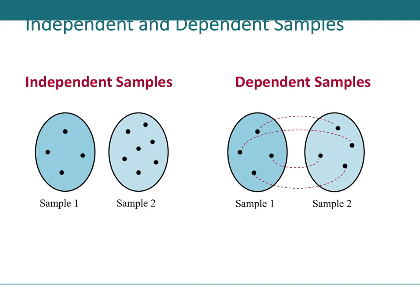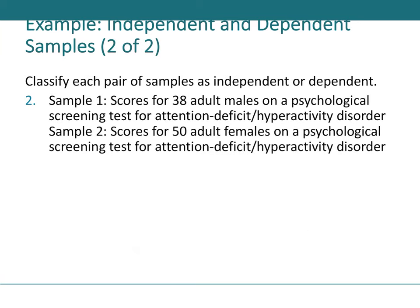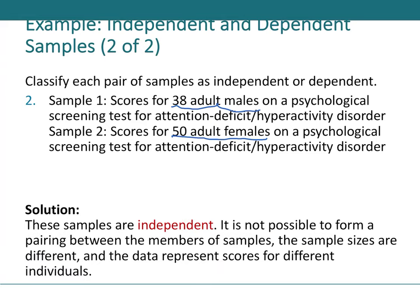Independent vs. dependent samples revisited: measuring triglyceride levels of the same 70 patients before and after taking a drug for six months is dependent—each patient can be paired. By contrast, ADHD screening scores for 38 adult males versus 30 adult females appear independent because the groups are not paired in any way.